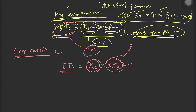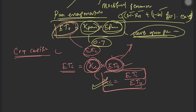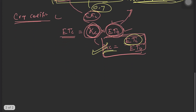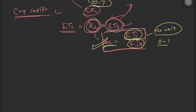Rearranging, crop coefficient Kc = ET crop / ET₀ — that is, the evapotranspiration by the crop divided by the reference evapotranspiration. Crop coefficient has no unit and mostly its value varies from 0 to 1. In some exceptions like rice and banana, which are the most water-intensive crops, the value may reach 1.1 or 1.2. But for most crops it varies from 0 to 1.